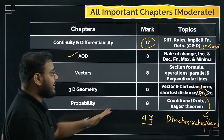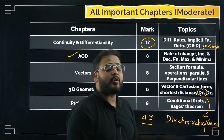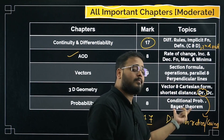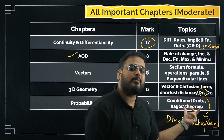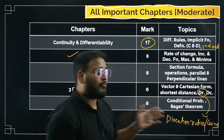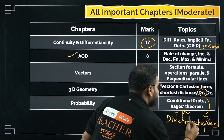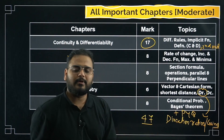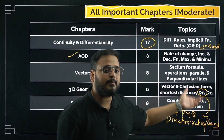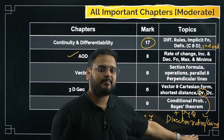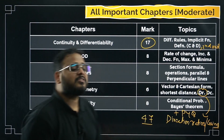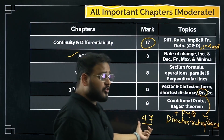Moving on to Probability — 8 marks weightage here. What is very important? Conditional probability — that is most important because even in Bayes' theorem, questions can be solved using conditional probability. So the most important things are conditional probability and Bayes' theorem. Solve PYQs of probability — that will be more than enough to solve any question in probability coming your way.